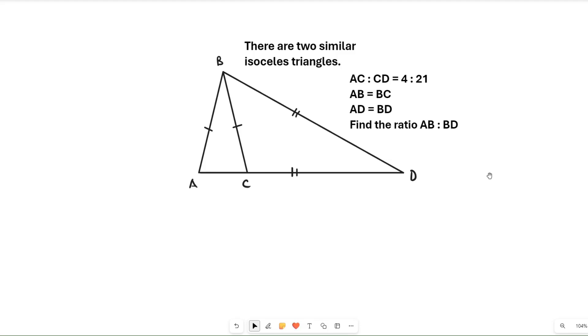AB equals BC, so we know it's an isosceles triangle, and we have AD equals BD. I've drawn the lines in on the diagram for you. What we're going to try and find is the ratio AB to BD.